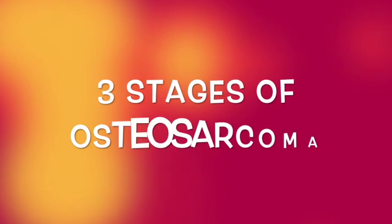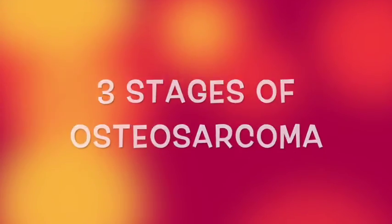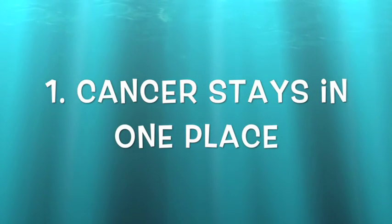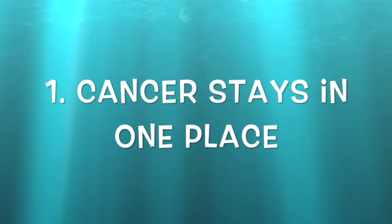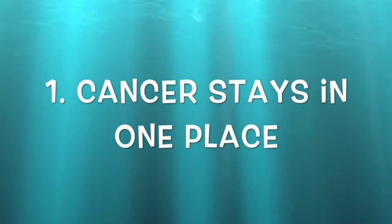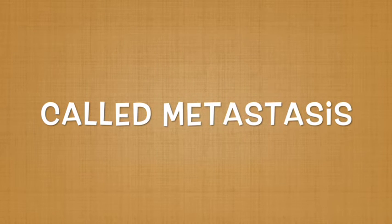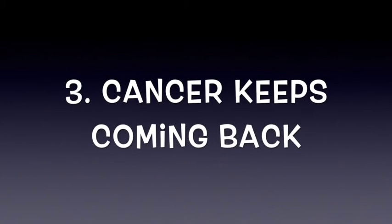There are three stages of osteosarcoma. In the first stage, the cancer cells stay on the bone where they started. This is the best stage to find out about the cancer, since the doctors can treat it most easily. The second stage is where the cancer cells start spreading to other parts of your body — this is called metastasis. The final stage is where the cancer keeps coming back, even after it has been treated.